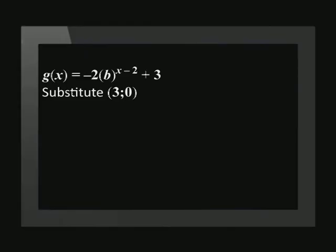Let's substitute the point (3, 0) into the equation. This gives us 0 equals negative 2 times b to the power of 3 minus 2 plus 3. Now we simplify. Negative 3 equals negative 2 times b to the power of 1.